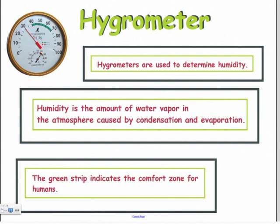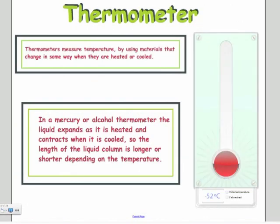A hydrometer measures humidity. The humidity is the amount of water vapor in the atmosphere that can be attributed to condensation and evaporation. So if you remember your water cycle, the water vapor or the level of humidity would tell you how much water is in the atmosphere. If you look at this hydrometer here, this green strip would be a reference point that's comfortable for most of us to live in.